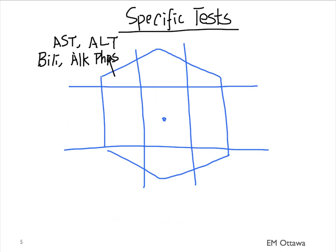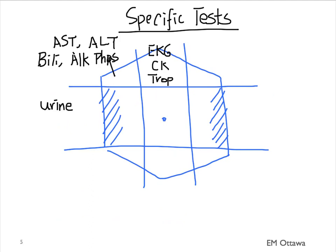For the epigastric area, we may wish to order an ECG and cardiac markers if the patient's history sounds cardiac. For the left upper quadrant, there are no specific tests for the spleen. In patients with flank pain, if we're worried about pyelonephritis or renal colic, we should do a urine dip — looking for the presence of red blood cells, white blood cells, and bacteria in the urine.